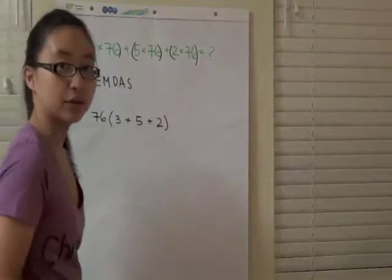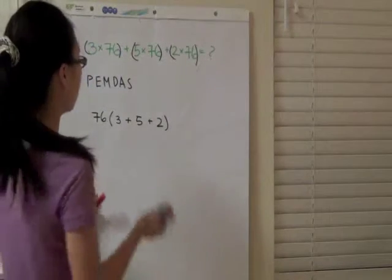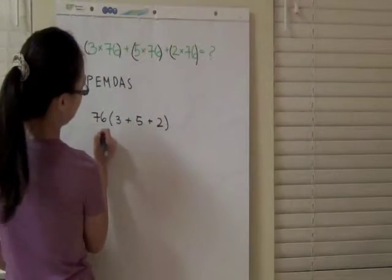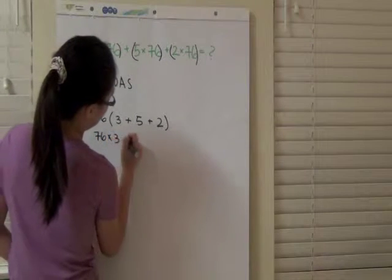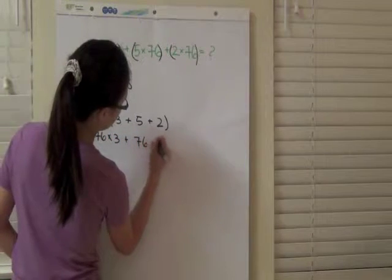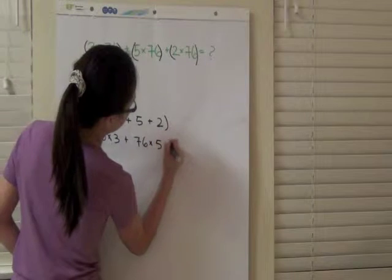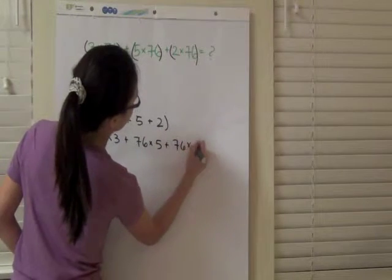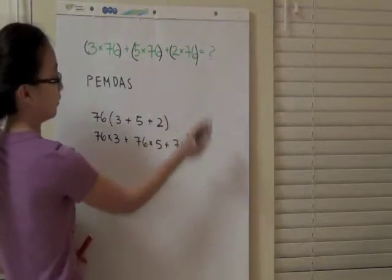And if you check this with distributive property, you'll see that it's the same thing as you had before because it's 76 times 3 plus 76 times 5 plus 76 times 2, which is exactly what you had before.